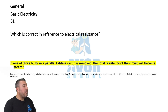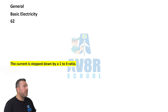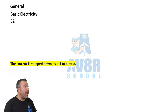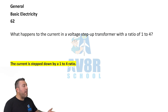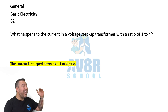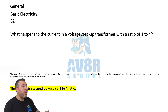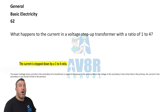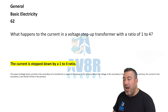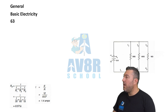If one of the three bulbs in a parallel lighting circuit is removed, the total resistance of the circuit will become greater. 62: The current is stepped down by a 1-to-4 ratio. What happens to the current in a voltage step-up transformer with a ratio of 1 to 4? The current is stepped down by a 1-to-4 ratio.